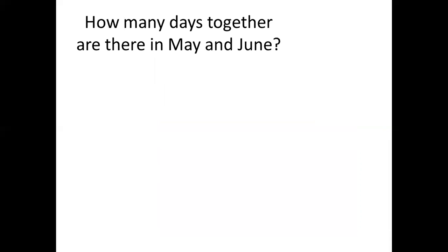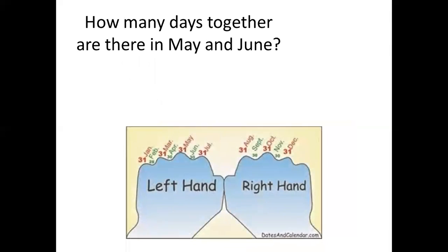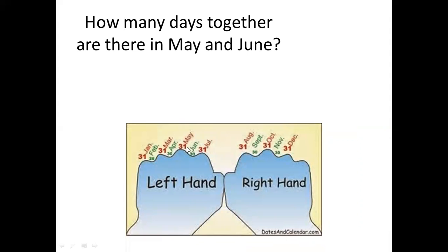Now, how many days together are there in May and June? May has, see here, see the picture here? Yes, 31. And June has 30. 31 and 30 together. How many days together are there in May and June? May has 31 days. June has 30 days. So, 31 plus 30. How much, children? 61 days. See, 1 plus 0 is 1. 3 plus 3 equals 6. So, total 61 days.